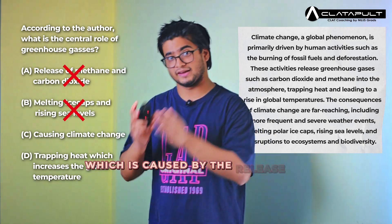Option C — causing climate change — is again a case of indirect causation. The role of greenhouse gases is to trap heat and raise global temperature, which resultantly causes climate change. So option C is incorrect. The right answer is option D: trapping heat and increasing the global temperature. This option directly emanates from the passage and we can find clear proof for it there. I hope this helps clarify how to deal with direct reasoning-based questions and how to eliminate incorrect options. See you next time!